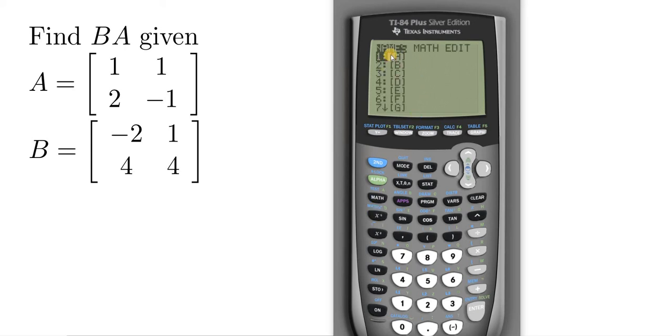And then here you have three choices. You have names, math, and edit. Names is where you access your matrix. Math has a list of commands that you can perform on matrices, and edit is where you change the values inside your matrix. So we have to go to the edit menu first in order to enter our matrices.